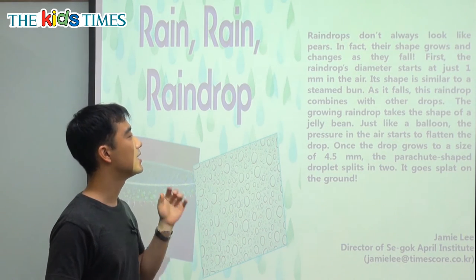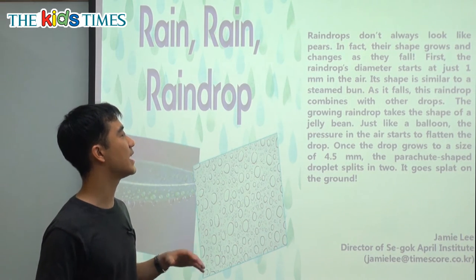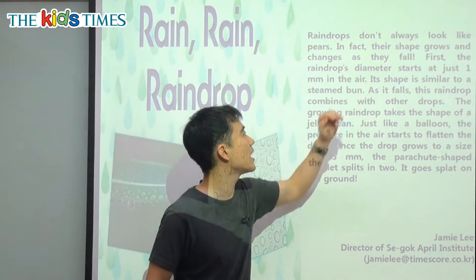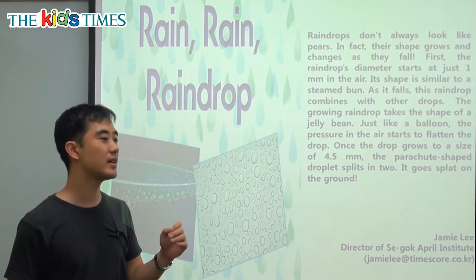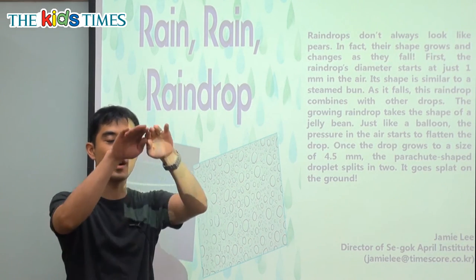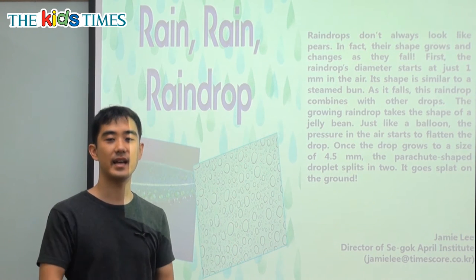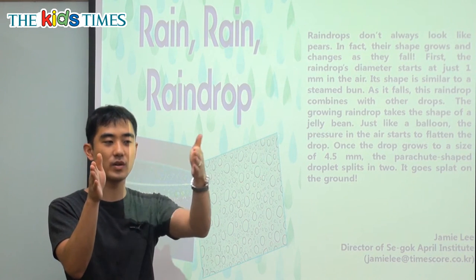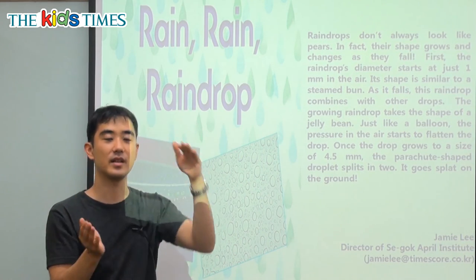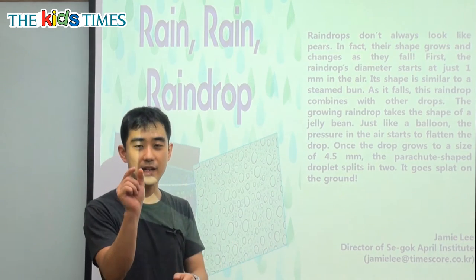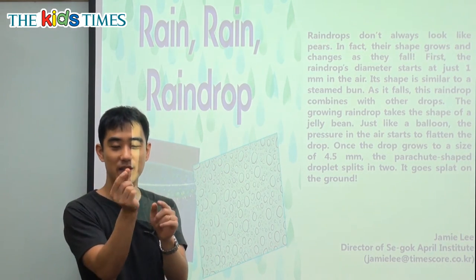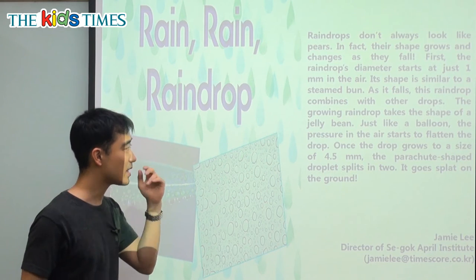First, the raindrop's diameter starts at just one millimeter in the air. We have this vocabulary word: diameter. Diameter is talking about the size of something. So when we have a soccer ball, the diameter would be from the beginning of the soccer ball all the way to the end — how wide the soccer ball is. The diameter of the raindrop is very small, just one millimeter.